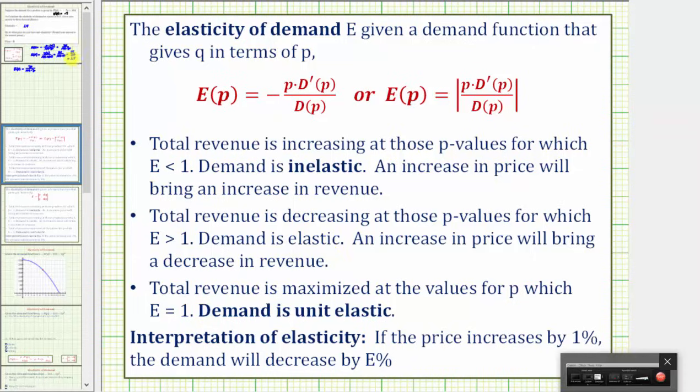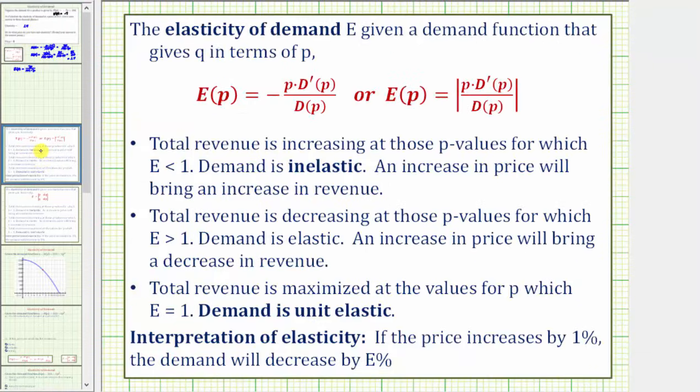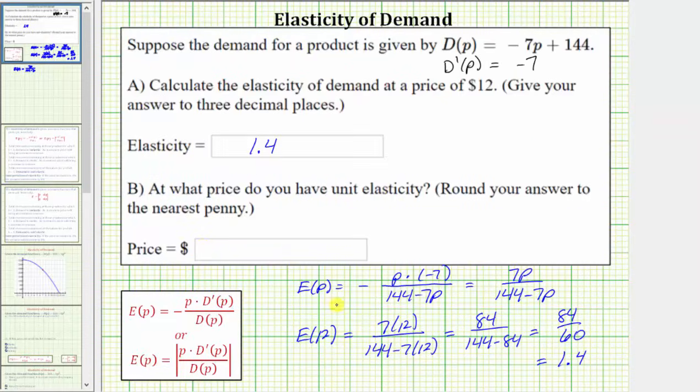And now for the second part of this question, we're asked at what price do we have unit elasticity? This refers to the situation where the total revenue is maximized at the values of p for which e, the elasticity, equals 1. And we say demand is unit elastic, or we have unit elasticity. So to answer part b, we need to set e of p equal to 1 and solve for p. Let's do this on the next slide.